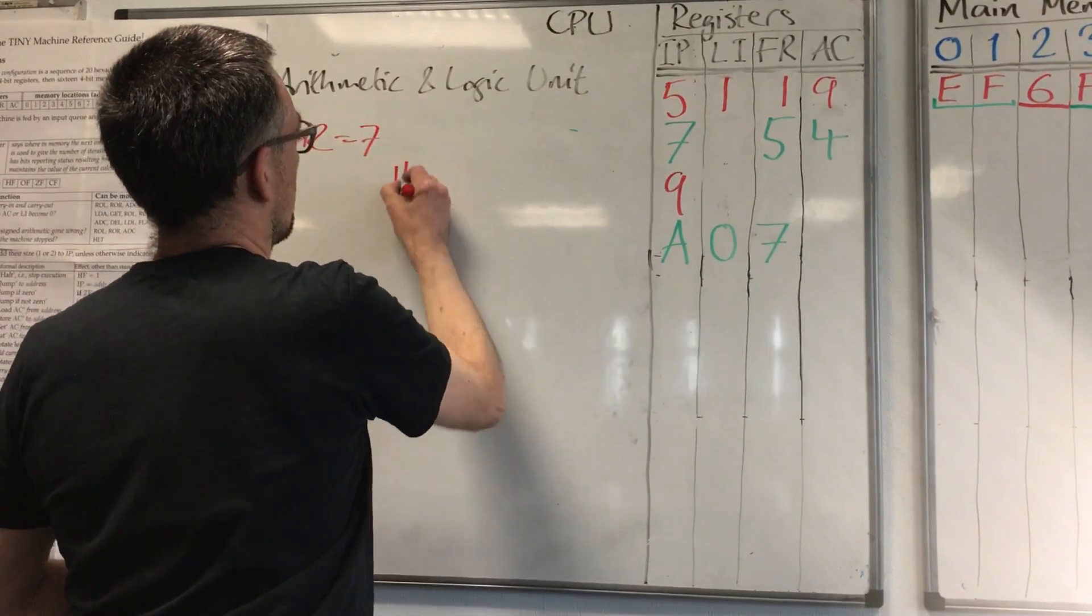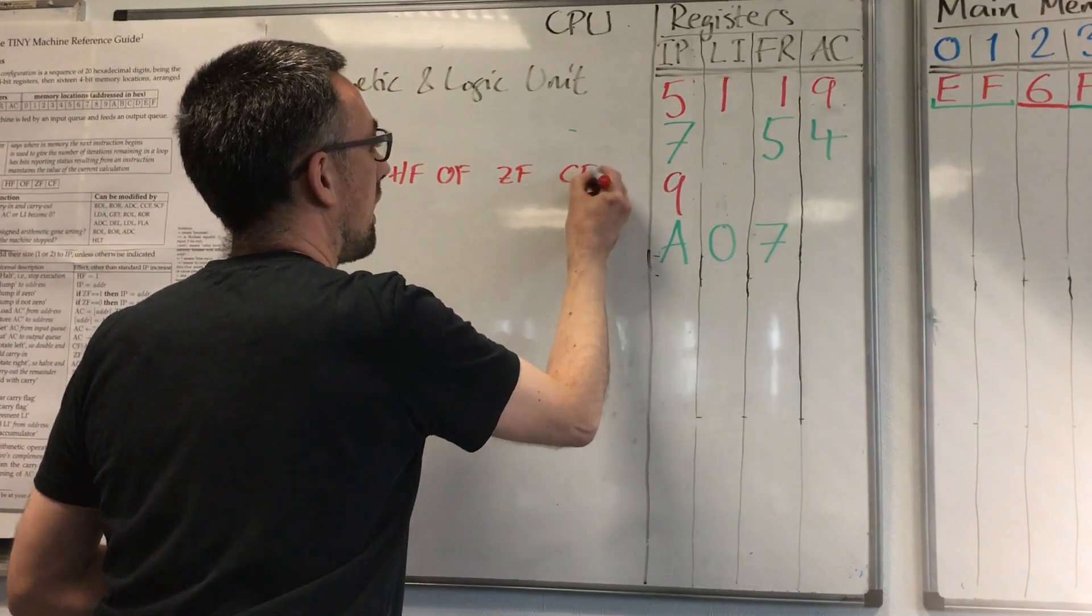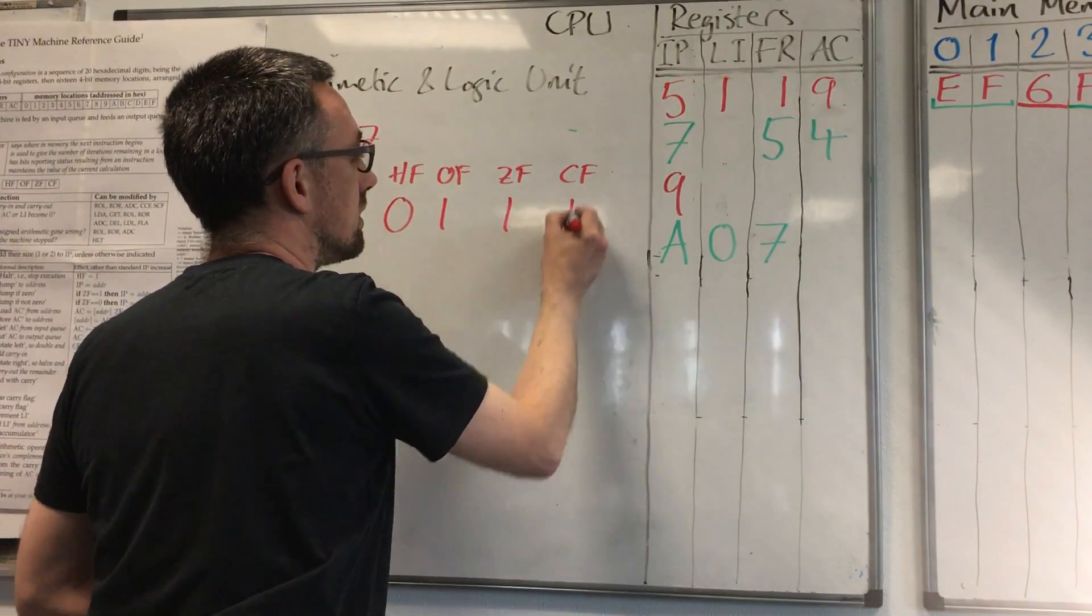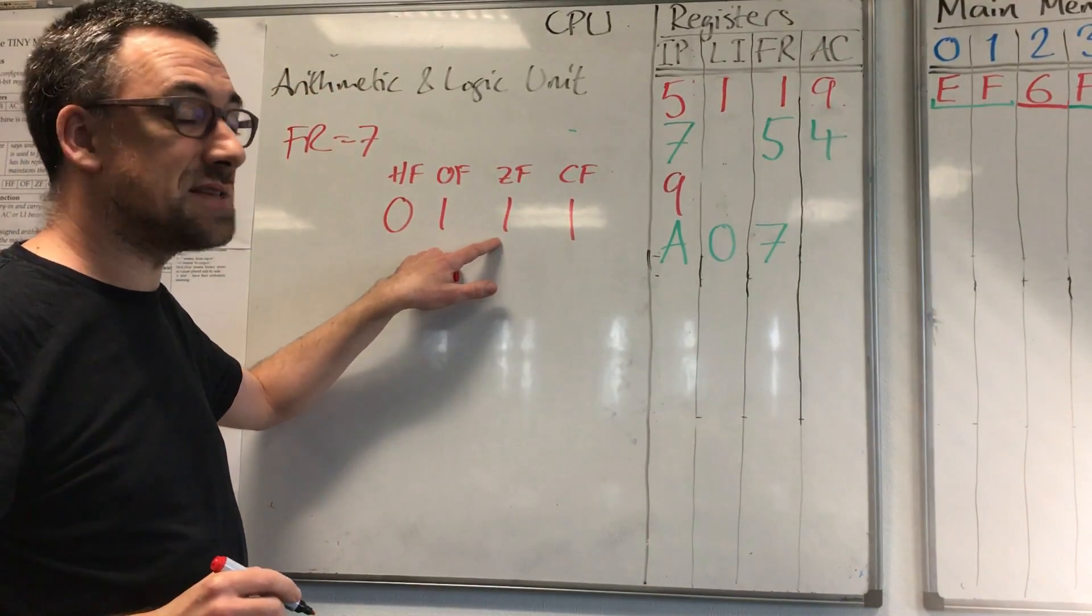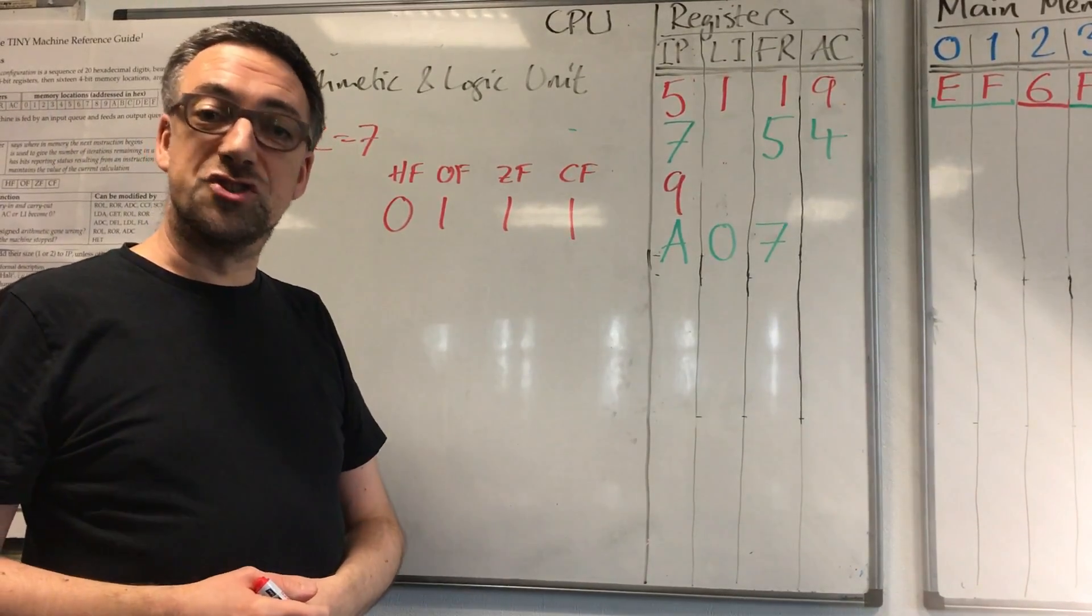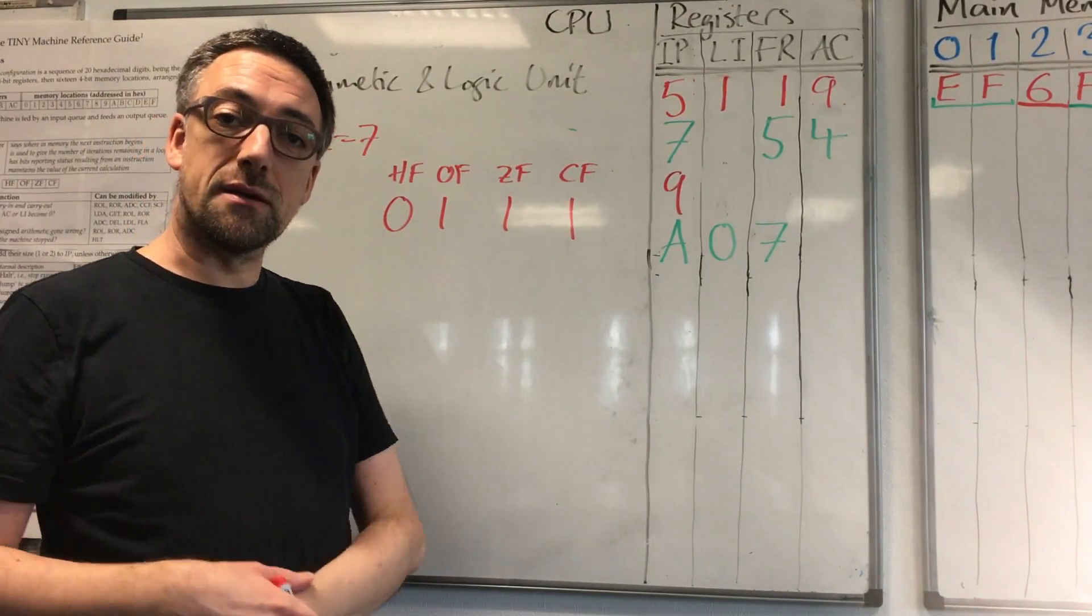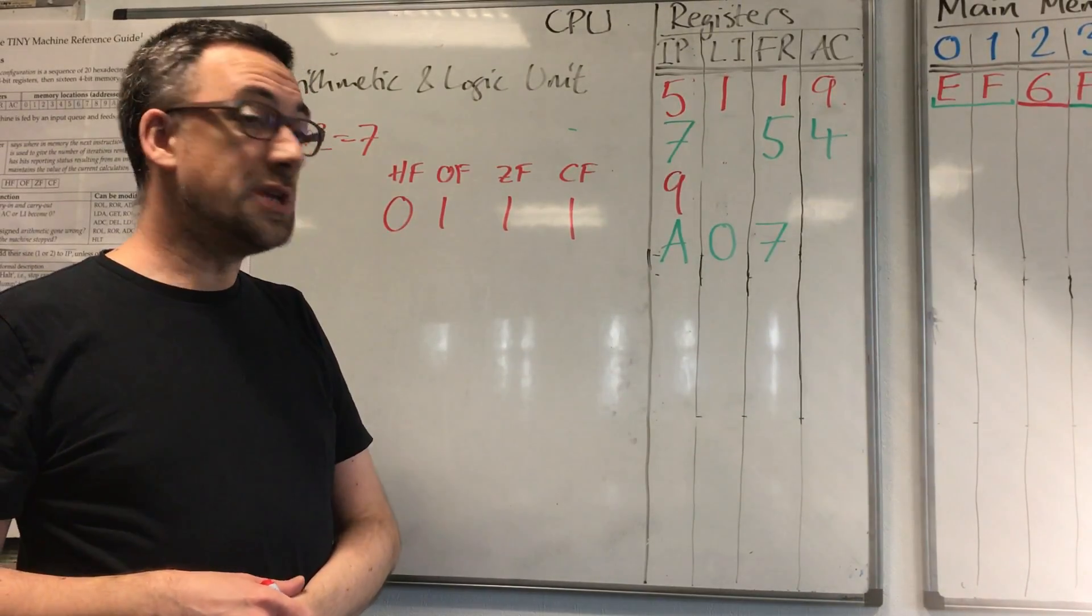If we unpack the flags—hold flag, overflow flag, zero flag, carry flag—we see we have 0, 1, 1, 1, so the zero flag is set. Now jump if not zero would jump if the zero flag was clear. As the zero flag is set, we do not jump.